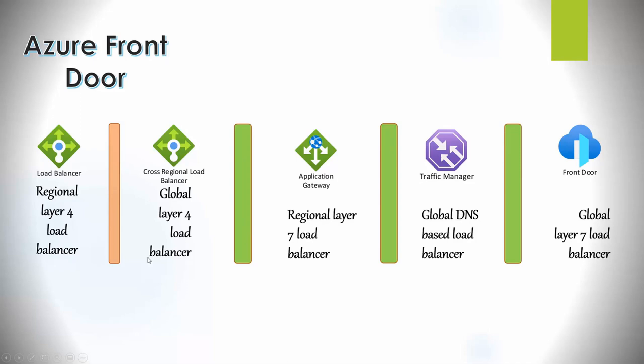Azure Front Door is a global load balancing solution. It also offers protection of applications, APIs, and websites with threat protection feature capabilities built in. This is all at layer 7. It's also a cloud content delivery network which provides acceleration for static and dynamic content.